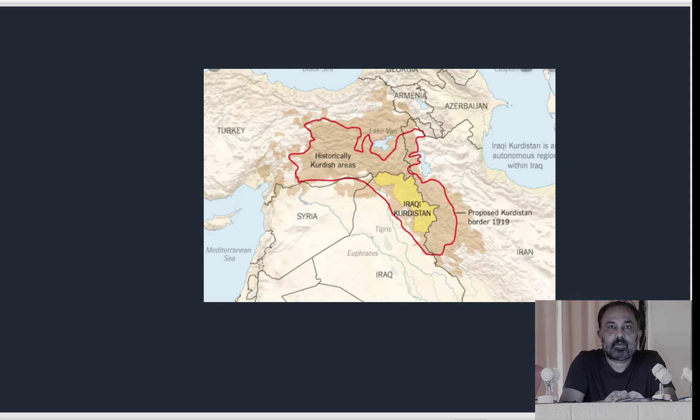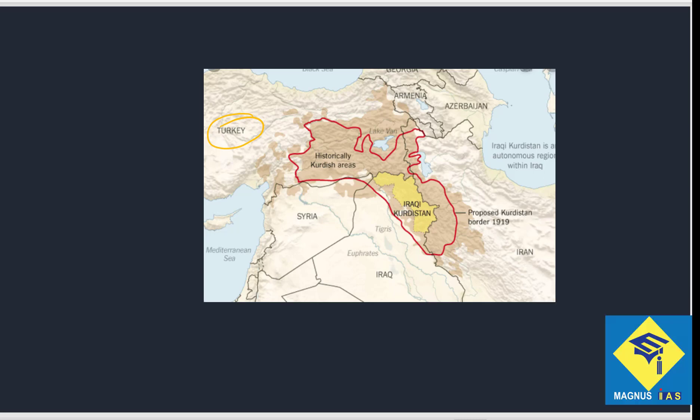In the backdrop, we have the map of Turkey, with its capital Ankara, and the historical Kurdish areas shown in red. This area has boundaries touching Syria, Iraq, Iran, and Turkey itself.